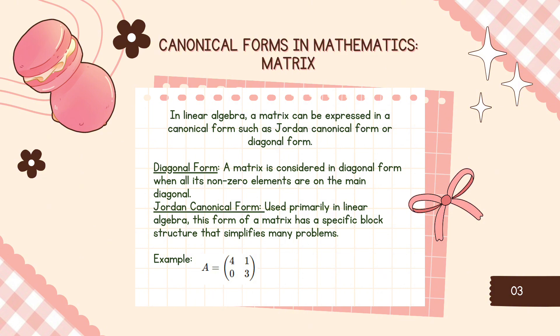Next is canonical forms in mathematics, for example, matrix. In linear algebra, a matrix can be expressed in a canonical form such as Jordan canonical form or diagonal form. Diagonal form is a matrix that is considered in diagonal form when all its non-zero elements are on the main diagonal. Jordan canonical form is used primarily in linear algebra. This form of a matrix has a specific block structure that simplifies many problems. Example: A equals 4, 0, 1, 3. This matrix is already in diagonal form where all off-diagonal elements are 0. This is a simpler and standardized representation of the matrix.